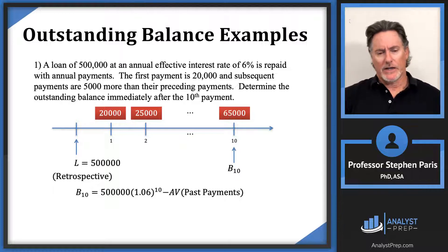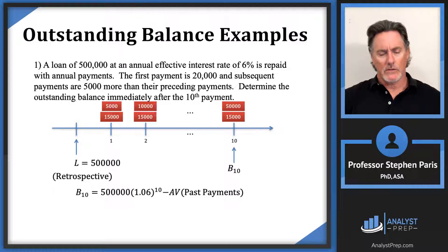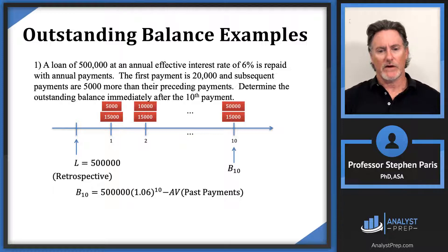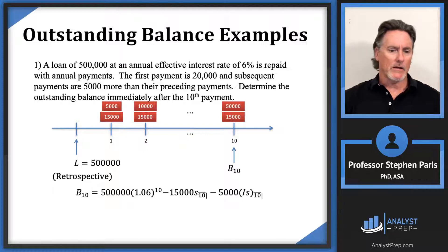One way to handle the arithmetic annuity: since the common difference is $5,000, peel off $15,000 from each payment, leaving payments of $5,000 at time 1, $10,000 at time 2, and so forth up to $50,000 at time 10. The accumulated value of those payments at time 10 is then $15,000 times s-angle-10 plus $5,000 times (Iä)s-angle-10.